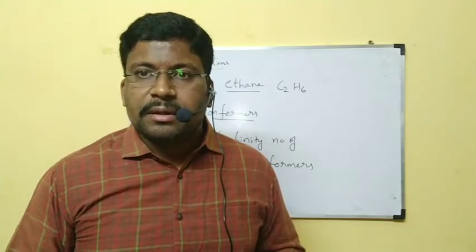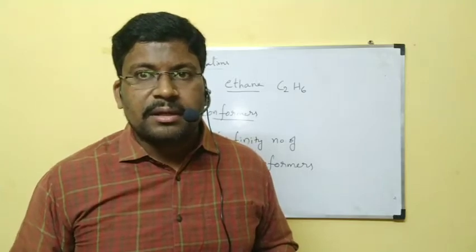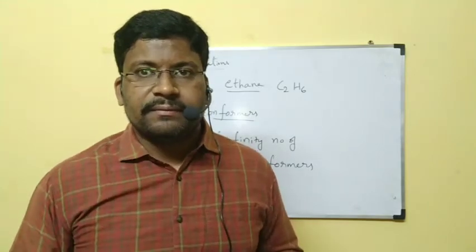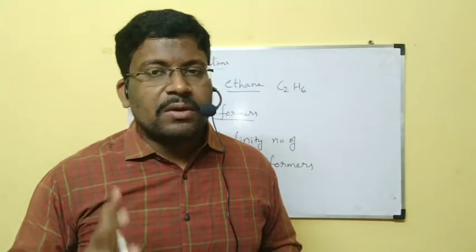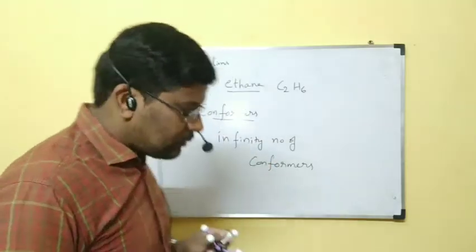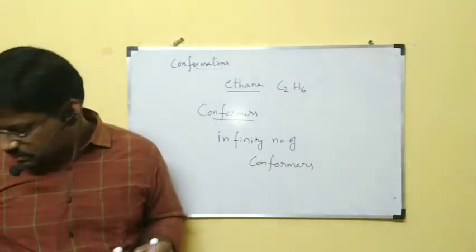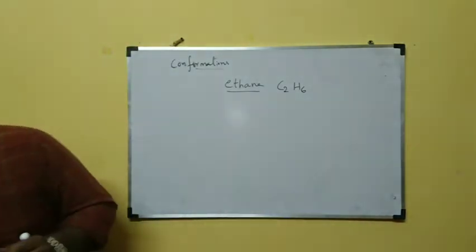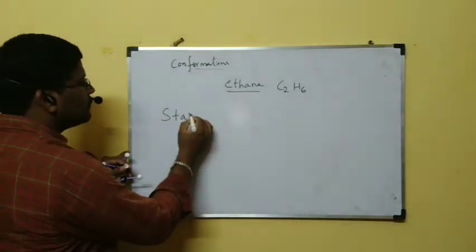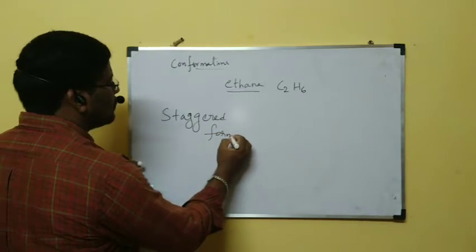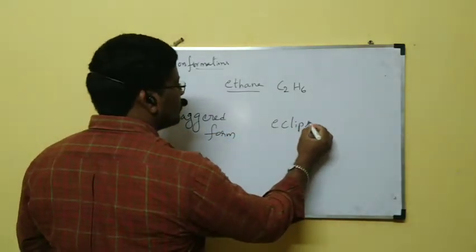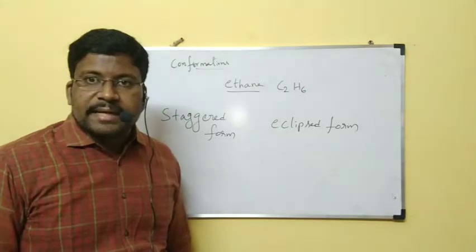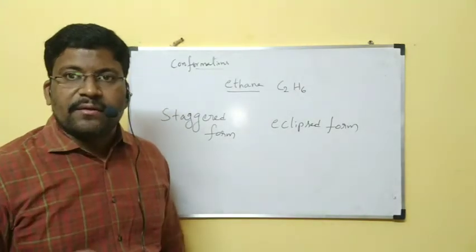An infinity number of conformers are possible for ethane. But among this infinity number of conformers, only two are highly familiar. Those two are called staggered form and eclipsed form.